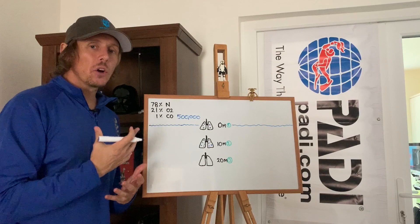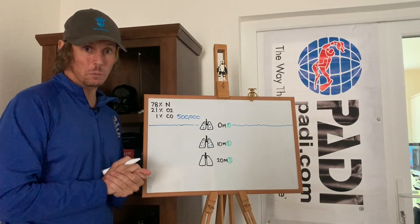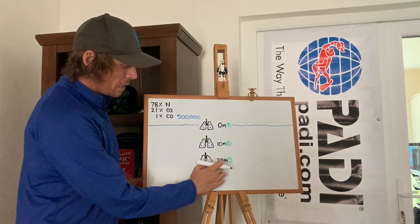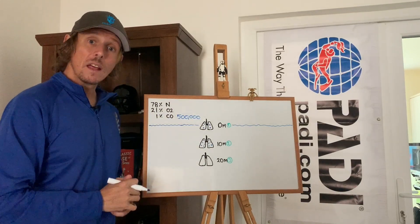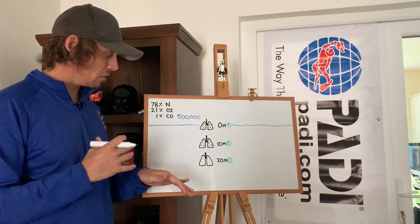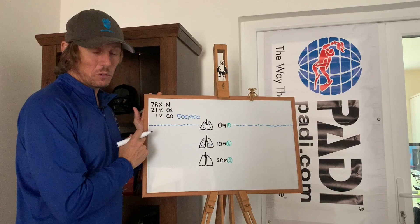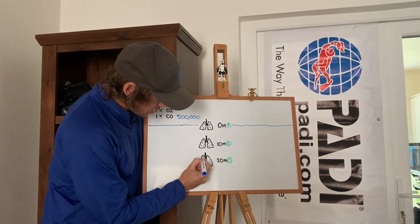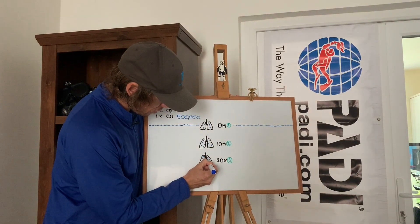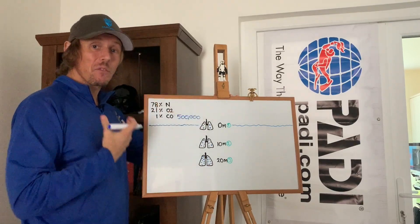Maybe we're not conditioned to filter that through without feeling any adverse reactions — it may start to have some sort of an impact. Let's take the gas to 20 meters, where the pressure is three times that at the surface. That means with every breath you take in, it's going to take three times as much gas to fill those lungs. So you're going to get three times 500,000 molecules — that's one and a half million molecules entering your respiratory system with every breath.